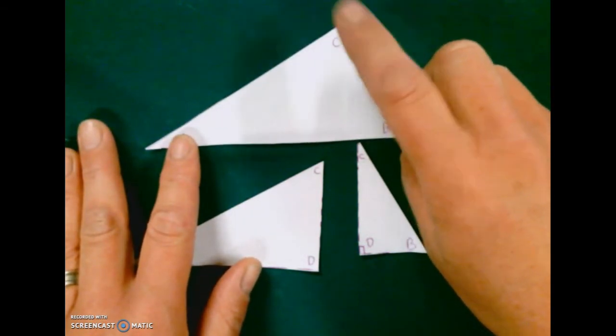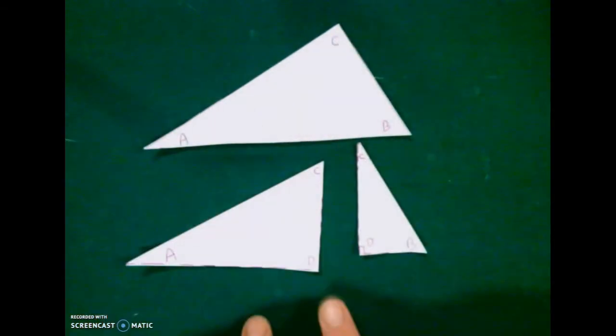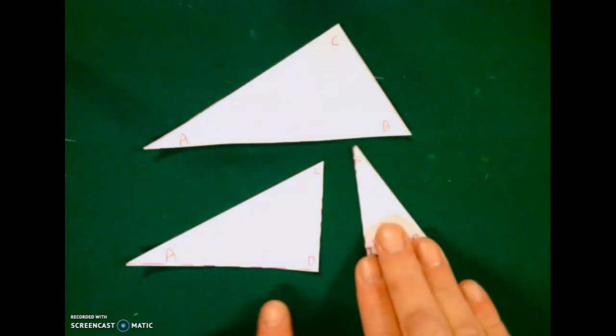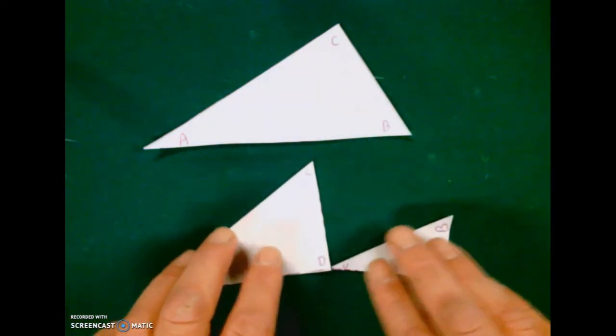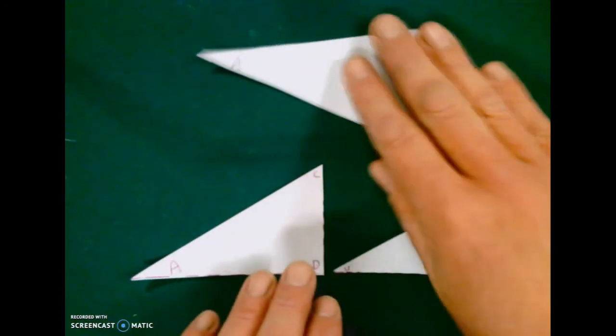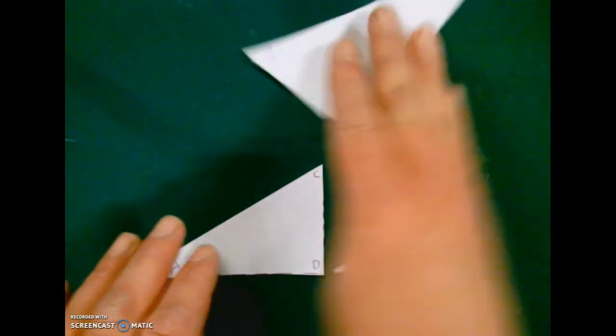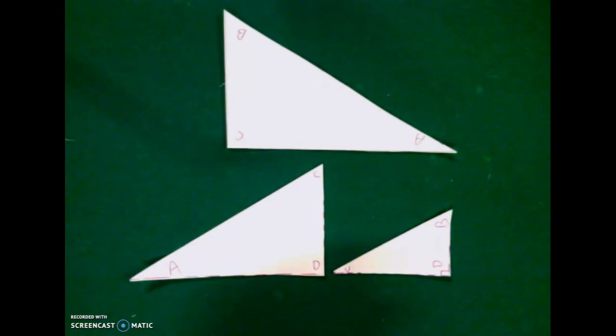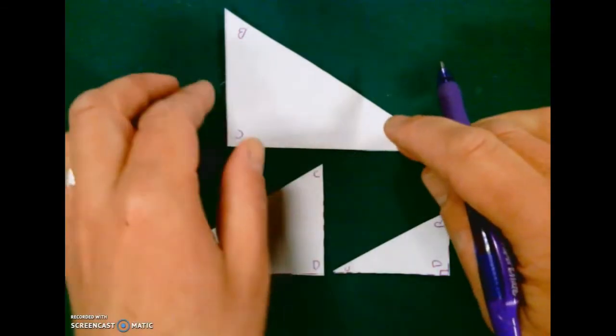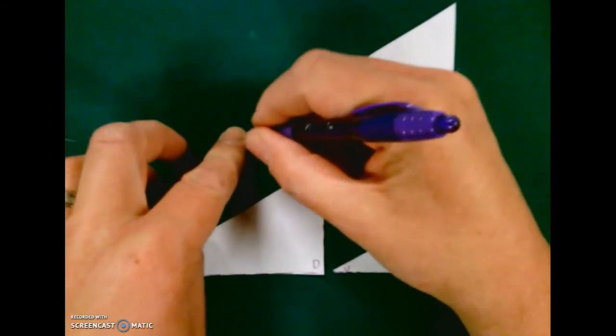We need them to face the same direction so we know which parts are congruent. This is the right angle, so we need to compare right angles to right angles. Right now I have the right angle at the top here, but this one has it at the bottom. We're going to flip it over. When I flip it over, A is now over here.